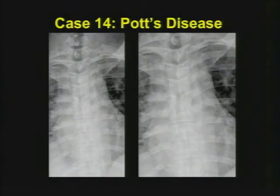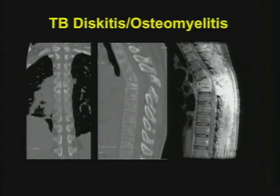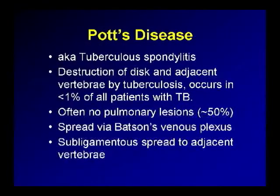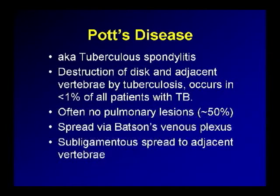Case number fourteen: chest pain, spine pain, back pain. In addition to aortic issues, always think about the spine. This was a case of Pott's disease — tuberculosis spondylitis. Notice the extensive bony destruction on CT and MRI, the focal kyphosis, and the subligamentous spread of the epidural abscess on sagittal MR. You often have very severe local destruction of the disc and adjacent vertebral bodies. Importantly, you can get tuberculosis spondylitis without pulmonary disease — that situation is very common. It spreads via Batson's venous plexus and subligamentous spread to adjacent vertebral bodies.